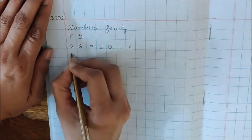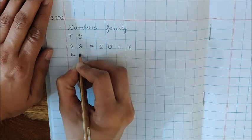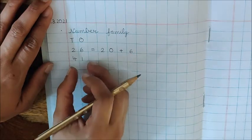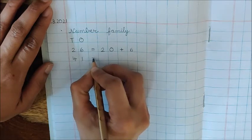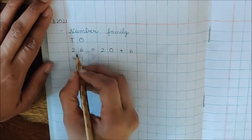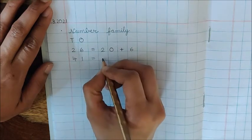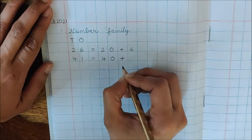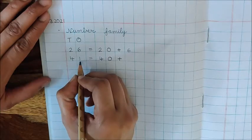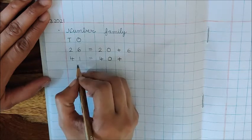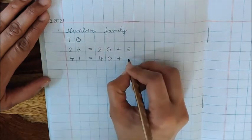Next number is 41. What is expanded form of 41? 41 is how many tens in this number? 4 tens. So write down here 4 tens and how many ones? Look which ones? Look which number is in 1's house? This is 1's house. Which number is in 1's house? 1. So write down here 1.